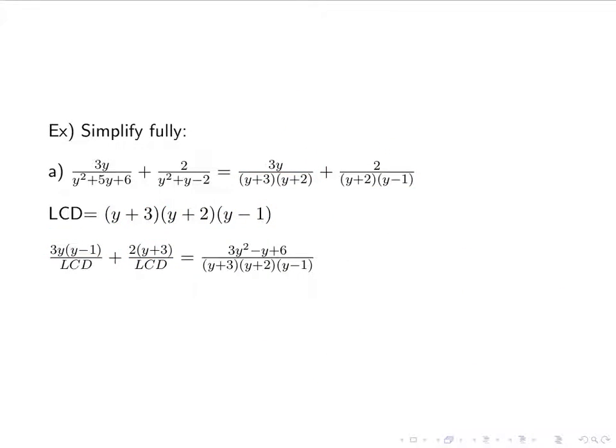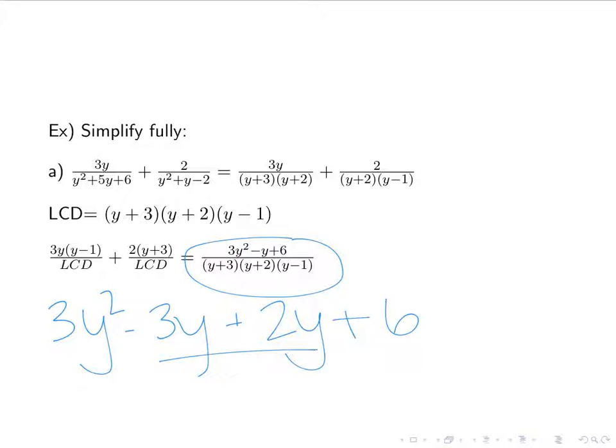And then we actually do the addition. So make sure you're distributing. We have 3y squared minus 3y plus 2y plus 6. And we can combine our middle terms to get this guy. Our last step would be to check it. Can we factor it? Can we simplify it? So I look at my numerator, 3y squared minus y plus 6. And I ask myself, are there two numbers that multiply to 3 times 6, so 18, and add to negative 1? The answer to that is no. So I can't factor it, so I can't simplify it. So this is my final answer.